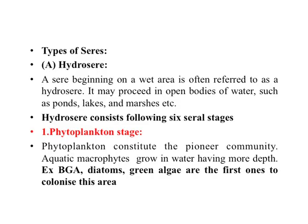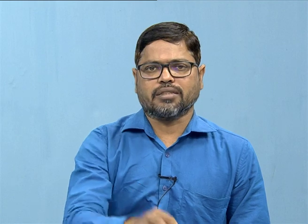The phytoplankton stage: phytoplanktons constitute the pioneer community of the hydrosere. These are aquatic macrophytes growing at greater depths in seas and lakes. Examples include blue-green algae, green algae, and diatoms. These grow in colonized form — meaning they grow in rounded colonies — at the depths of seas and lakes.